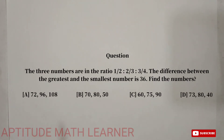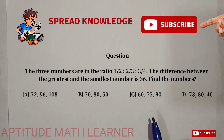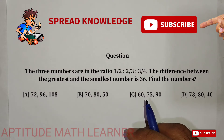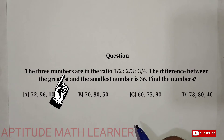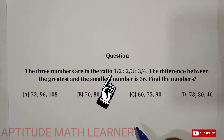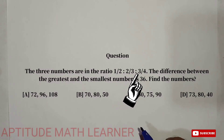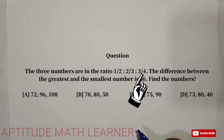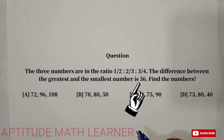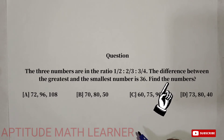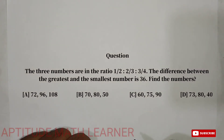Welcome to my YouTube channel Aptitude Math Learner. Today we have a very interesting question: three numbers are in the ratio 1/2 : 2/3 : 3/4, and the difference between the greatest and the smallest number is 36. We have to find the three numbers, and identify the greatest and the smallest.